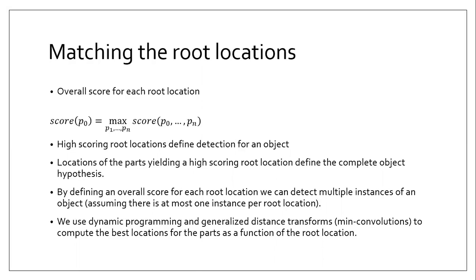This score p0 is calculated for every point in the overall image, allowing us to determine: if the object were at this position, what is the most likely configuration of its parts? High-scoring root locations — where the score of p0 is high — are more likely to contain the object, because the deformation cost is low and parts are close to their normal positions relative to the root. The location of parts yielding a high-scoring root location defines the complete object hypothesis. We use dynamic programming and generalized distance transforms, also known as mini-convolutions, to compute the best part locations as a function of the root location.